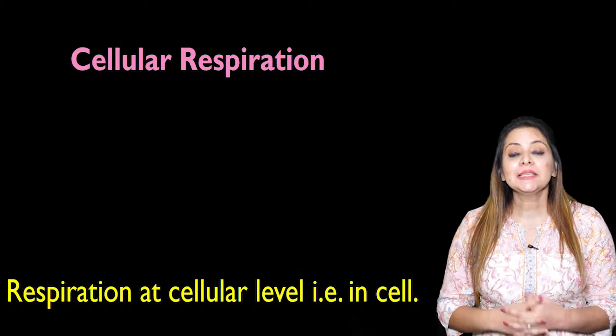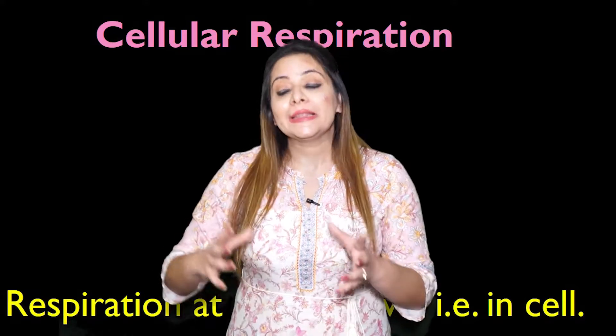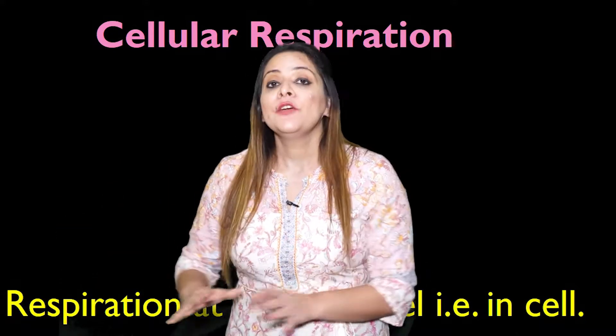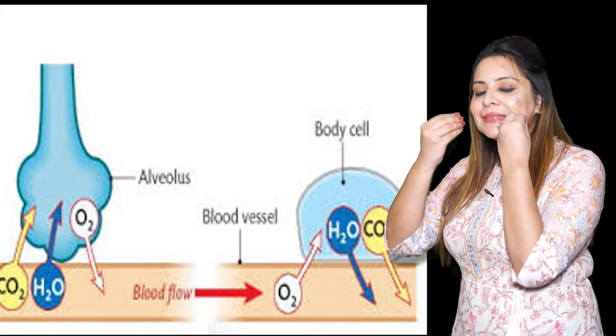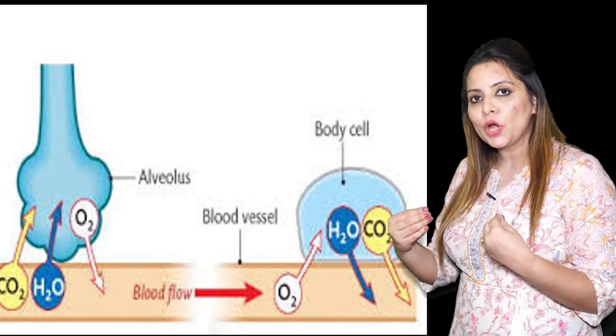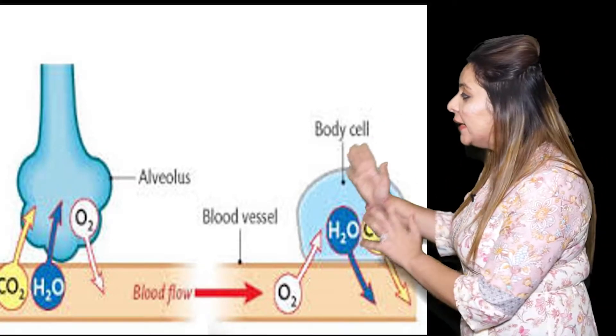Now let's discuss cellular respiration — respiration at the cellular level. Oxygen travels through the nostrils, nasal cavity, pharynx, trachea, bronchi, primary, secondary, and tertiary bronchi, then bronchioles, and finally reaches the alveoli. The alveoli are surrounded by capillaries, and since oxygen concentration is higher in the alveoli than in the capillary blood, oxygen diffuses from the alveoli into the blood.